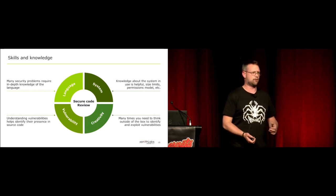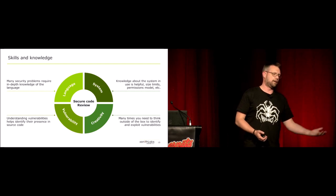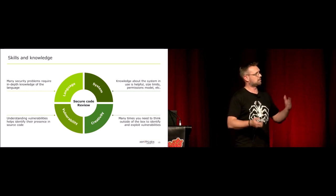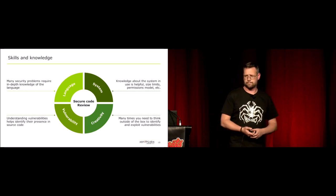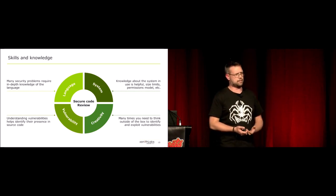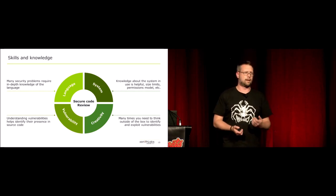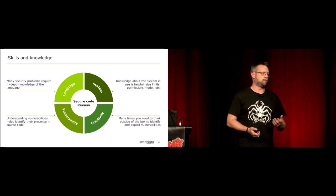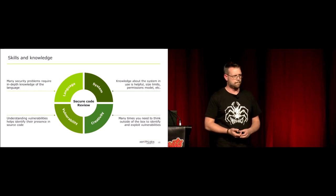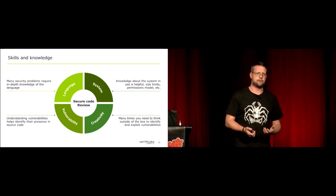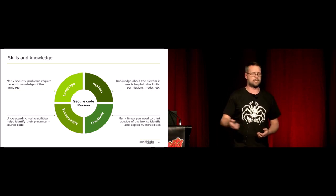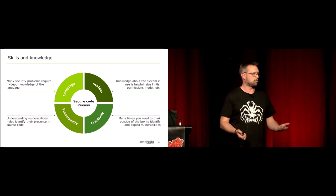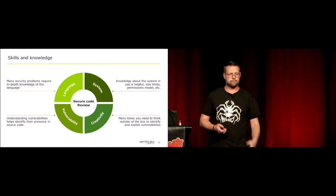You need to understand the systems the code is running on — vulnerabilities in PHP on Windows versus Linux can be different. Things like memory allocation size, registry size, 32-bit, 64-bit all play into it. You also need to understand vulnerabilities, because code reviewers tend to focus on correctness and function of the code, but may not be familiar with different vulnerability classes. On top of that, you need to be creative, because sometimes the vulnerability class hasn't been defined. At some stage somebody had to be the first person to go from a buffer overflow to actual code execution to a pivot. That takes creativity.